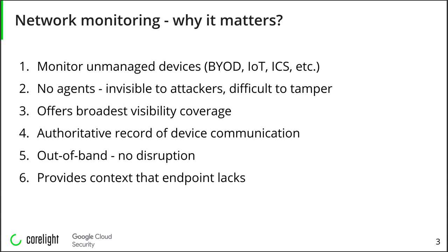We can debate whether it's an authoritative record, but to me, reliably captured network data decoded to layer seven is kind of an authoritative record of communication. Sure, you can communicate via carrier pigeon or offline methods, but these are esoteric. If you are communicating on the network, there will be a record of it somewhere. Now, monitoring is out of band — this is less of an advantage nowadays, but the fact that you can monitor without disrupting or slowing down anything is still valuable. And sometimes you see things that the endpoint does not have — context that endpoint lacks. These are true in 2021, and frankly some of them were true in 1991. That's why NDR and NSM are very much alive and used by people all over the world.